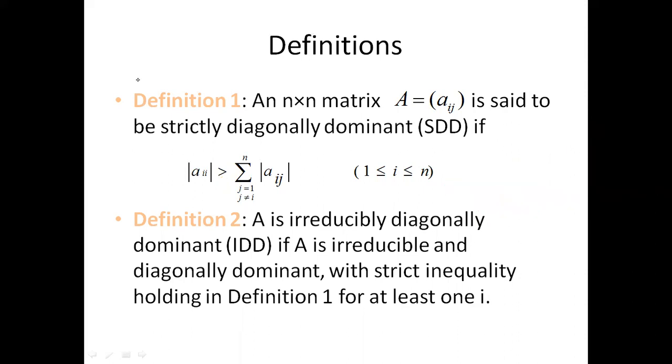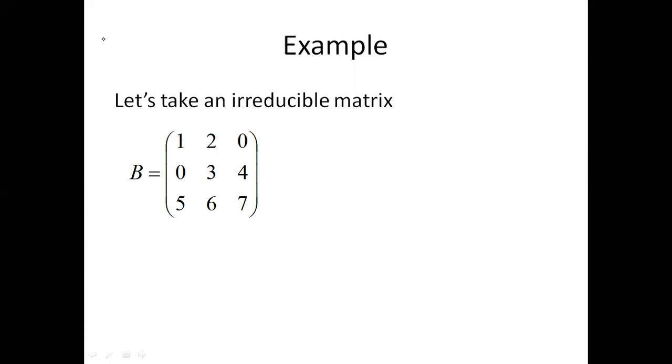Here's an example. I have already discussed in the previous video that this matrix B is irreducible. Now if this diagonal element is not greater than these off-diagonal elements, how do we fix it? For example, if I write here 2, then this is greater than these two elements.